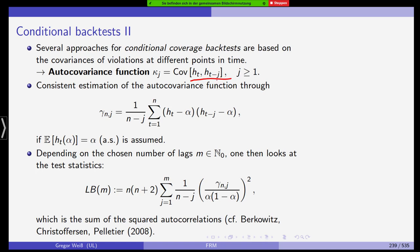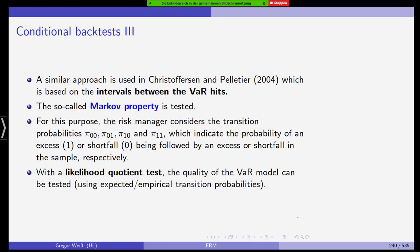We can have several approaches for conditional coverage backtests. They are usually based on the covariance of the violations at different points in time. In other words the auto-covariance function between H_T and H_T-J. The hit now and the hit one day ago or two days ago. We need a consistent estimator for the auto-covariance function. This is simply the sample auto-covariance. We can then use this test statistic which uses the auto-covariance function, the squared auto correlations actually. This is due to Berkowitz, Christoffersen and Pelletier in 2008. Similar approach is by Christoffersen and Pelletier in 2004. It is based on the intervals between the value-at-risk hits. Then we are checking the Markov property. The probabilities that after a 0 we have a 0, after we have a 0 we have a 1, or after a 1 we have a 0, or after a 1 we have a 1. These are four probabilities. You estimate those four probabilities from the sample. Then you get a matrix and use a likelihood quotient test to check the quality.